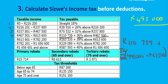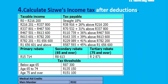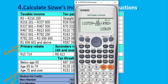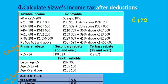Caesar's income tax before deduction is 110,739 plus 36% of (495,000 minus 467,500), which gives us 120,639. That is Caesar's income tax before deduction. Now let's go on to the next question: calculate Caesar's income tax after deductions. The deductions we are looking at here are your rebates and your medical aid. Caesar's income tax before deduction was 120,639, so now let's subtract the deductions, starting with the rebates.